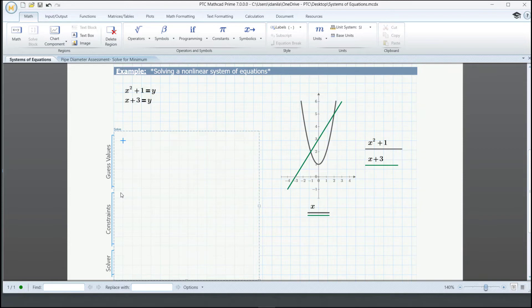Firstly, we type in our guess values, which are initial values to start our computation from. Then we add our constraints, which are limits for what we want to calculate, and we can simply copy them from here.